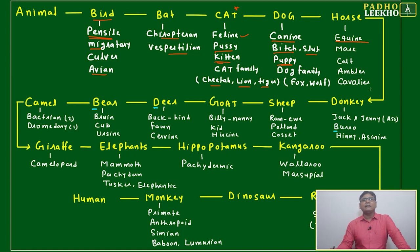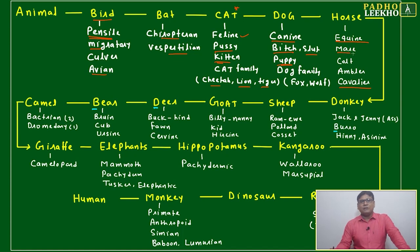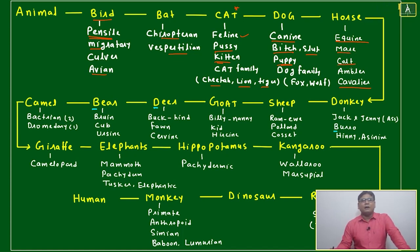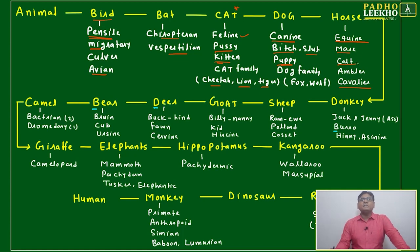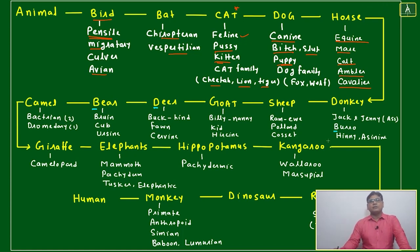Dog family includes fox, wolf, and dhole — all come in the dog family. Horse — equine — anywhere equine or cavalier appears it is related to horse. Mare means female horse.